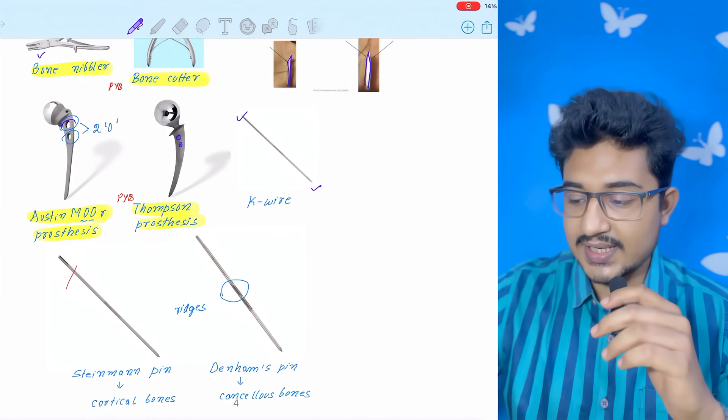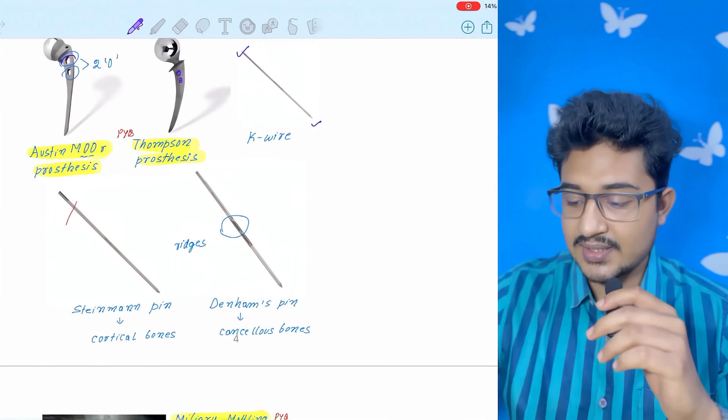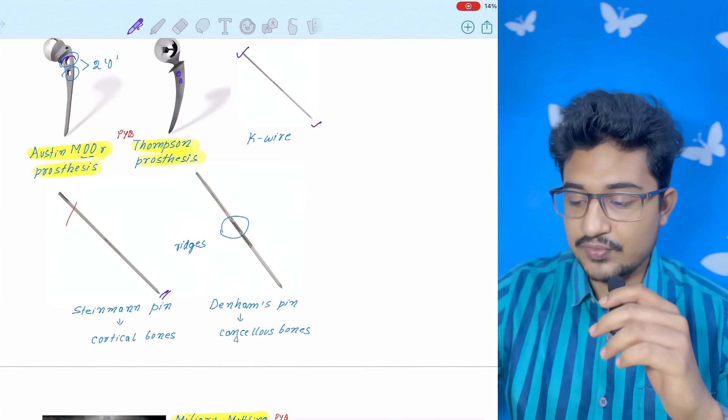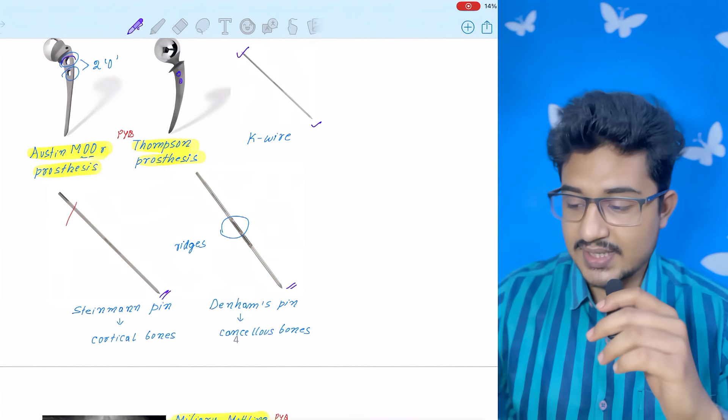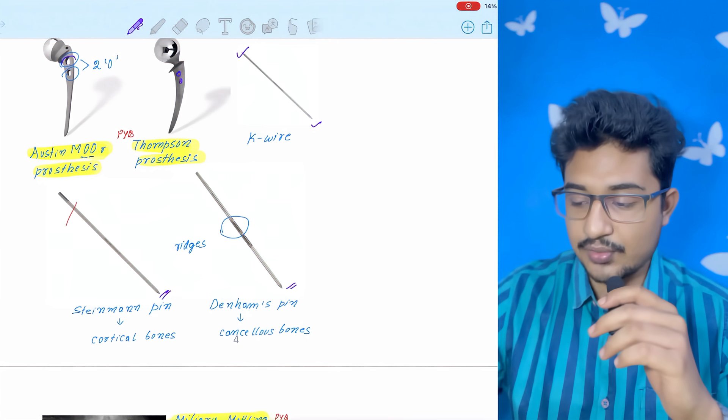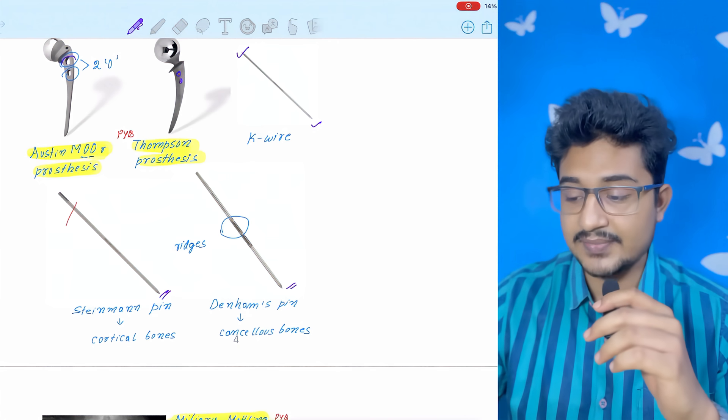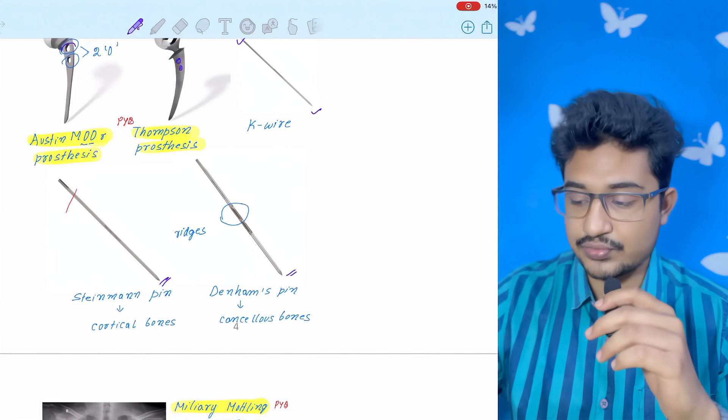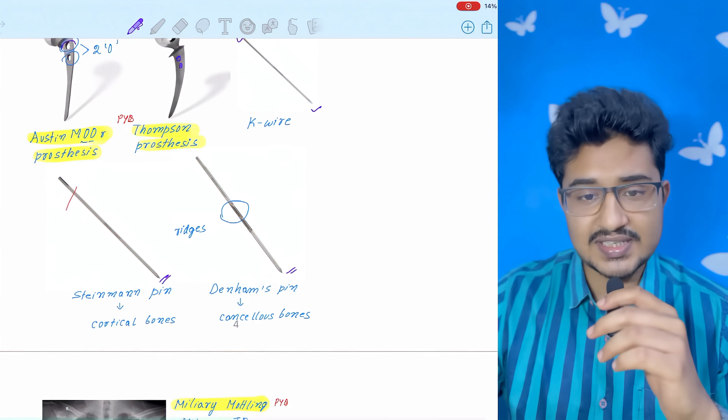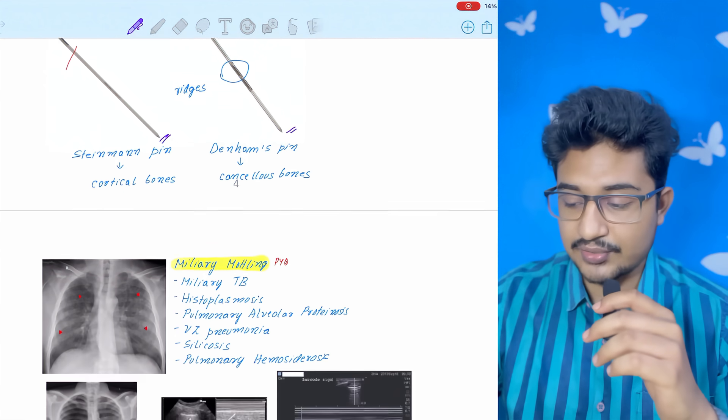K-wire: both ends are pointed. In pins, only one end is pointed. In Denham's and Steinmann, how you can differentiate: in Denham there are ridges and it is used for cancellous bones. Steinmann pin is used for cortical bones.